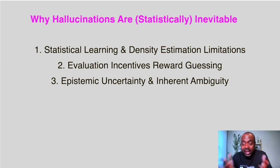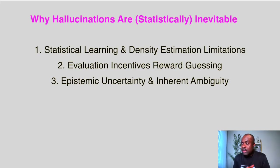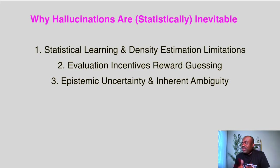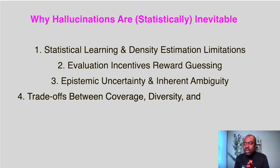Number three is epistemic uncertainty and inherent ambiguity in data. Some facts are just inherently uncertain or missing in the real world — they are not present in the training data, and the model has no way of knowing them. This epistemic uncertainty means that at some point the model has to guess, and that is what we call hallucination.